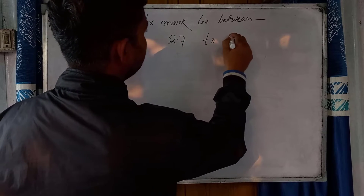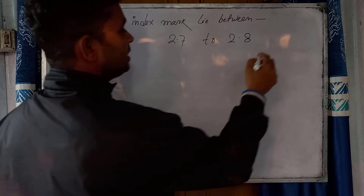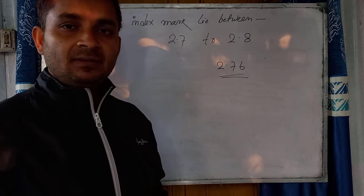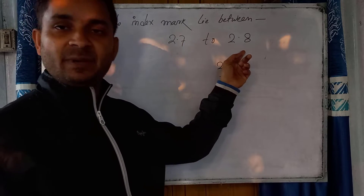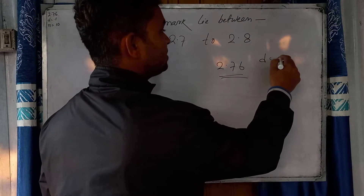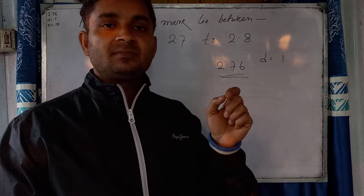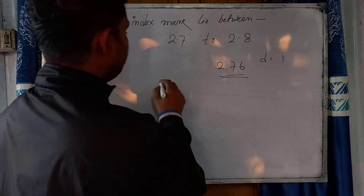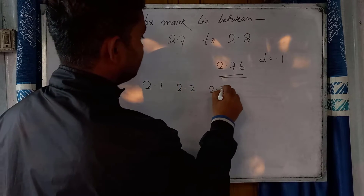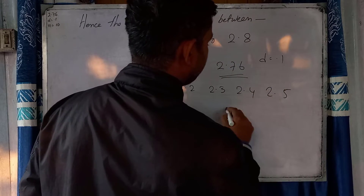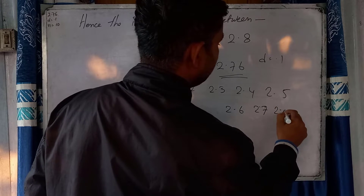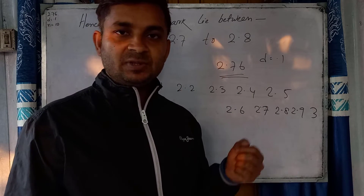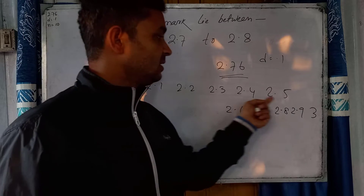D is 0.1, so the scale goes from 2.7 to 2.8. Your required data is 2.76. The scale divisions are: 2.4, 2.5, 2.6, 2.7, 2.8, 2.9, then 3. In this way you find the value. If D is 0.1, then your calculation system is this, and your reading falls between 2.7 and 2.8.